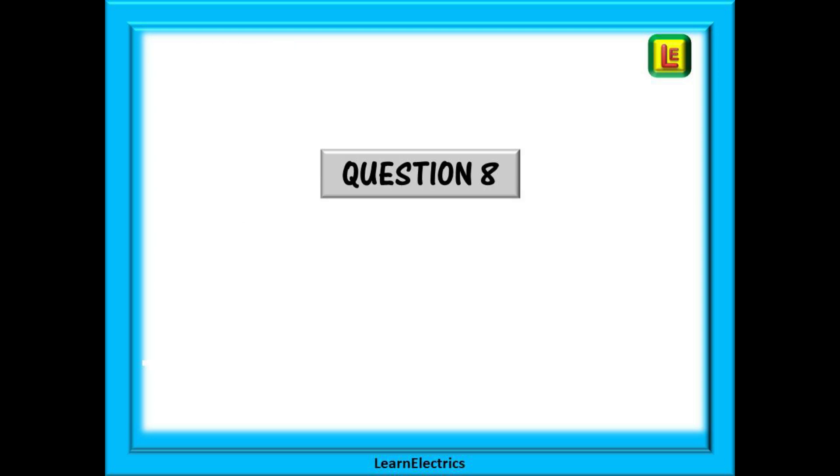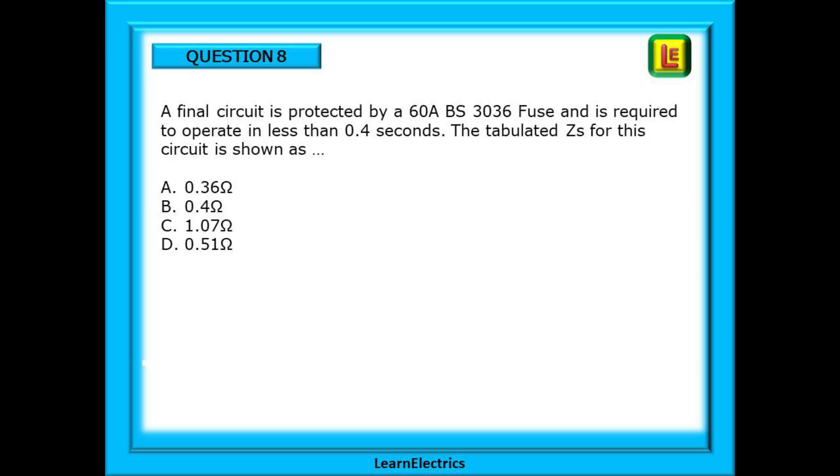And now, question 8. A final circuit is protected by a 60-amp BS EN 3036 fuse and is required to operate in less than 0.4 seconds. The tabulated ZS for this circuit is shown as... Pause the video, find the answer. Your answer should be choice B.